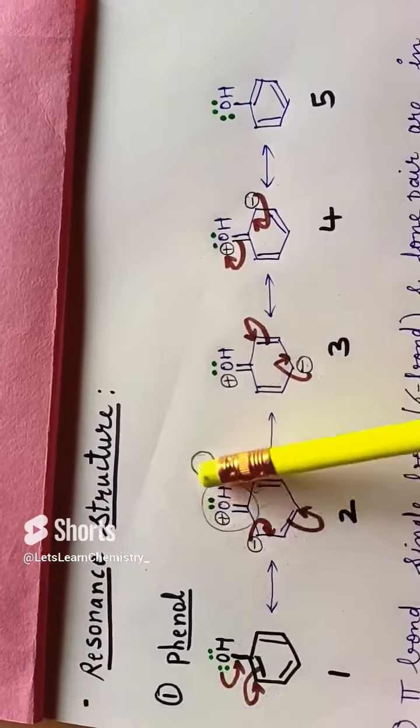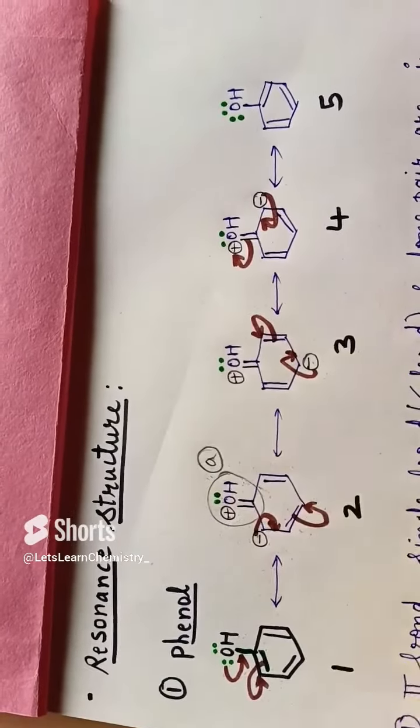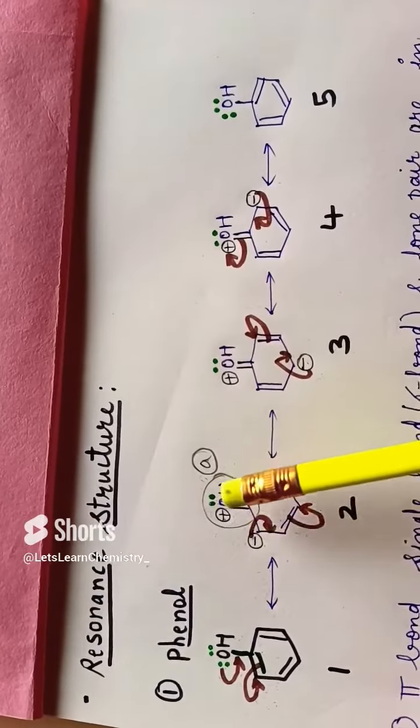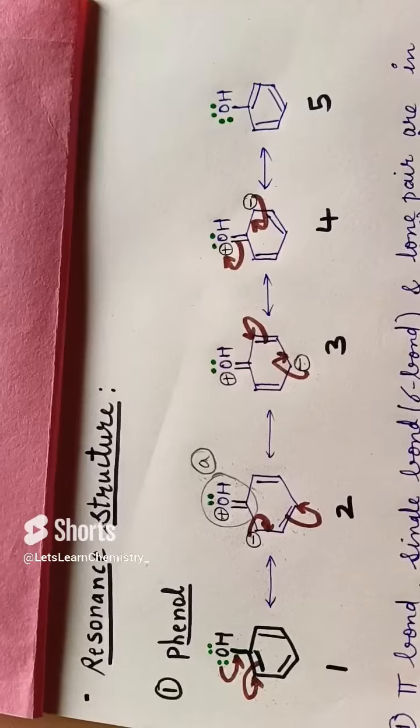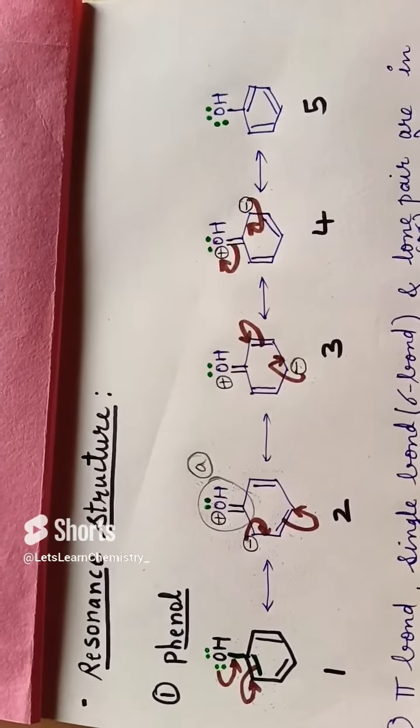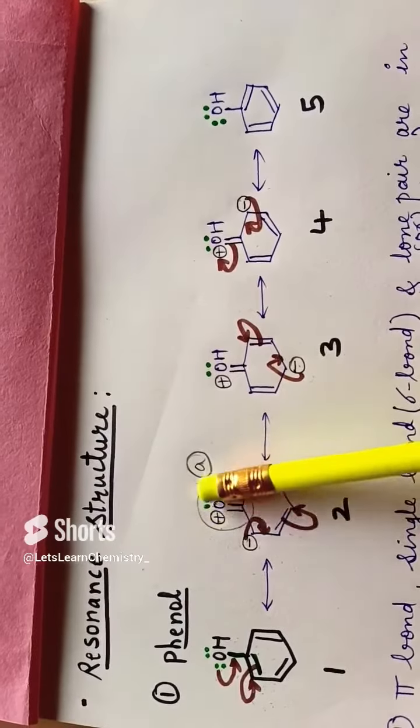Here, this lone pair shifts and forms this structure. The bonded electrons shift and form a negative charge. Oxygen is more electronegative. When its octet is completed by donating one of the lone pairs, it gets a positive charge.